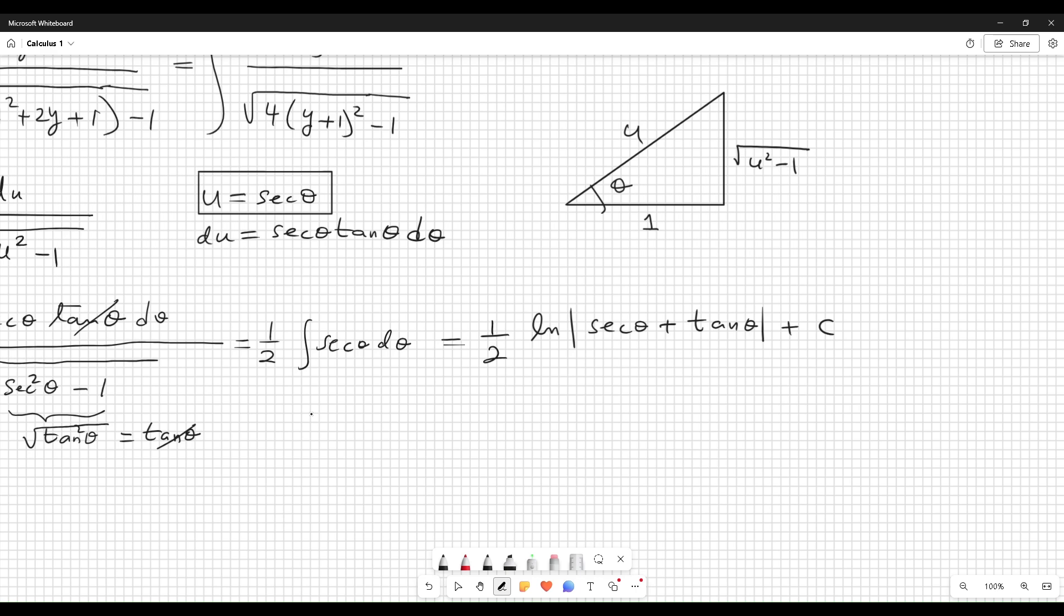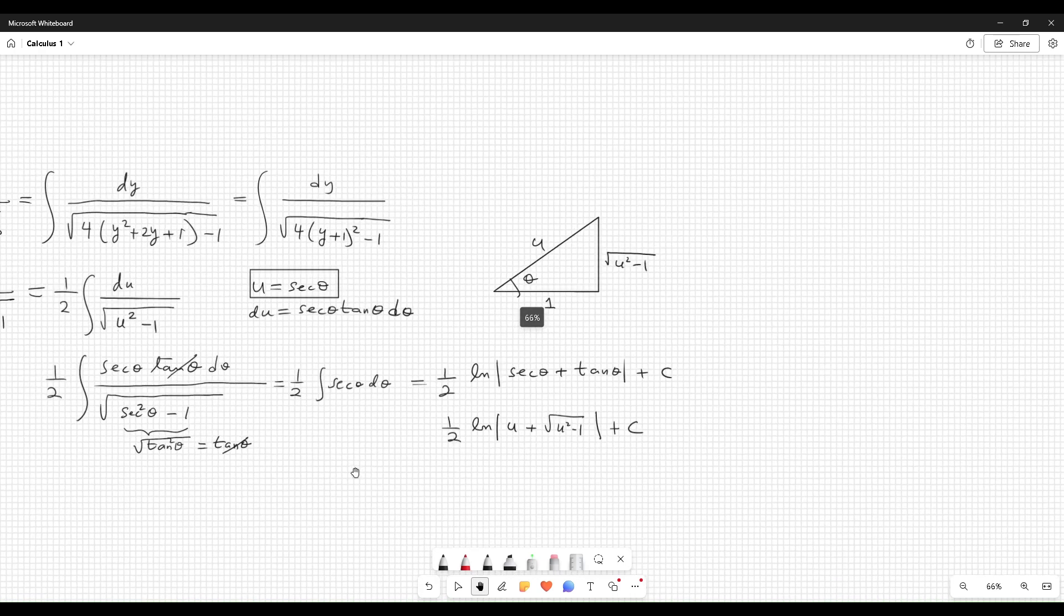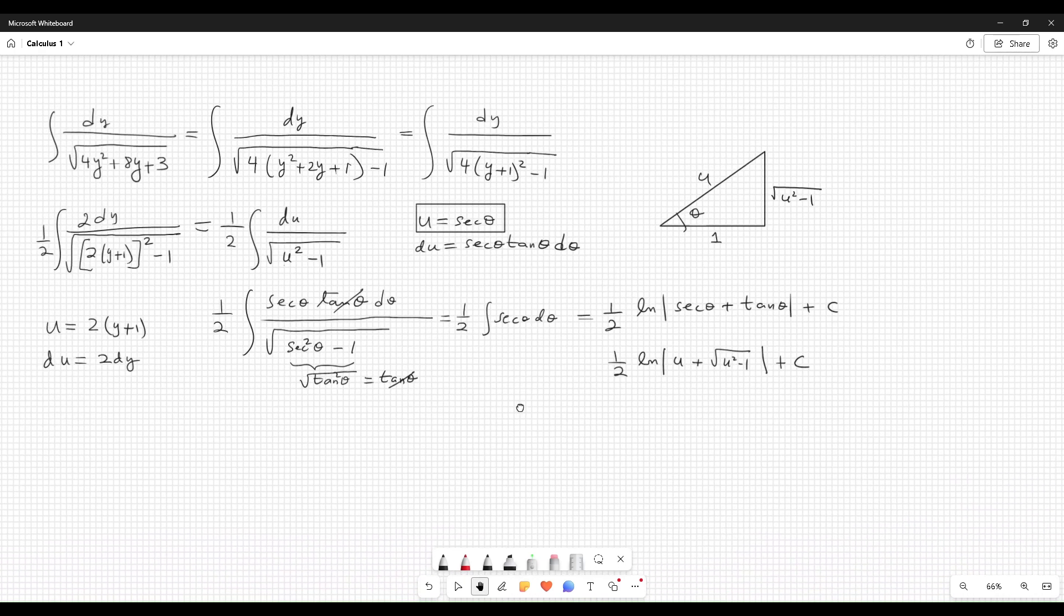And so now it's one-half natural logarithm of absolute value - secant is u over 1, which is just u, plus tangent, which is opposite over adjacent, square root of u squared minus 1. But what is u? What is the relationship between u and y?